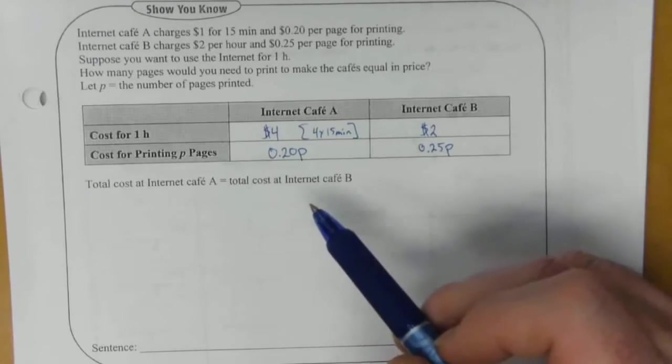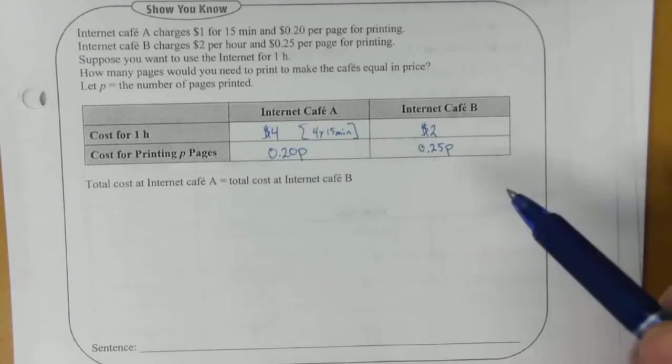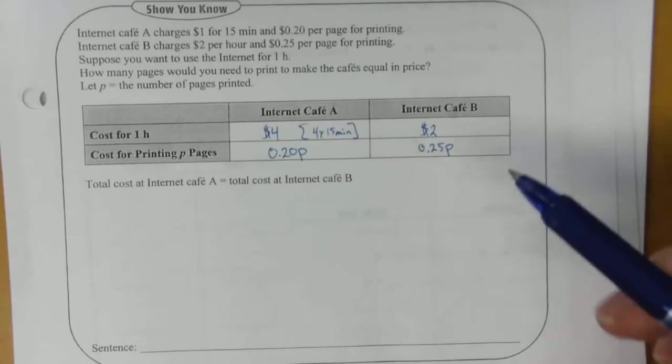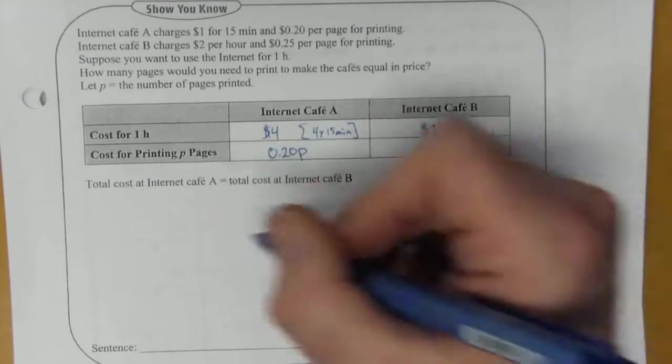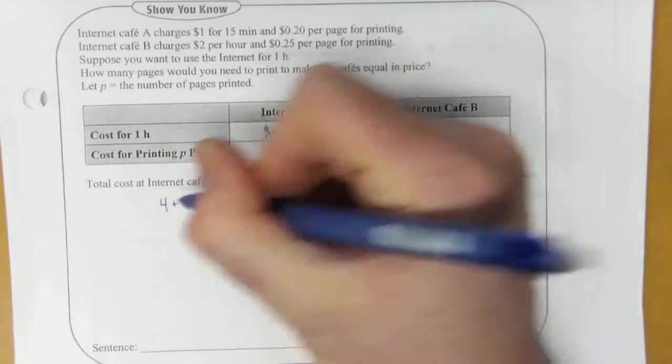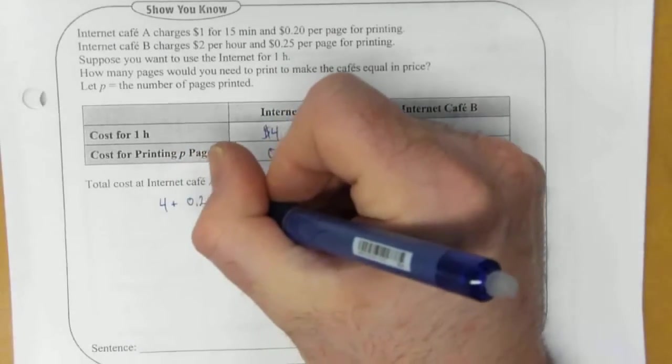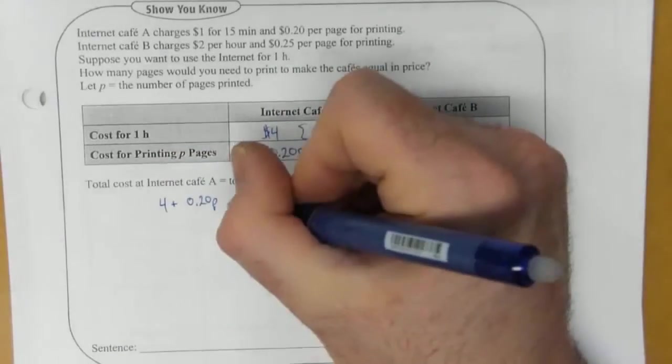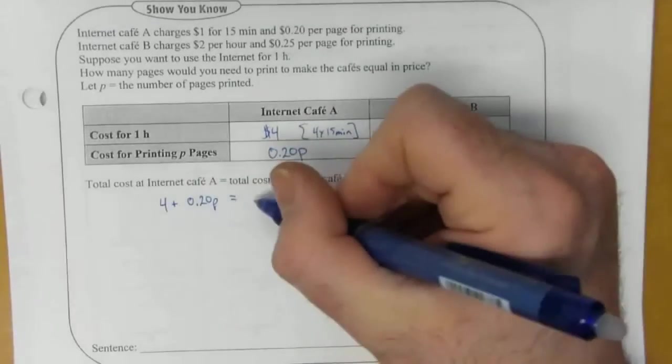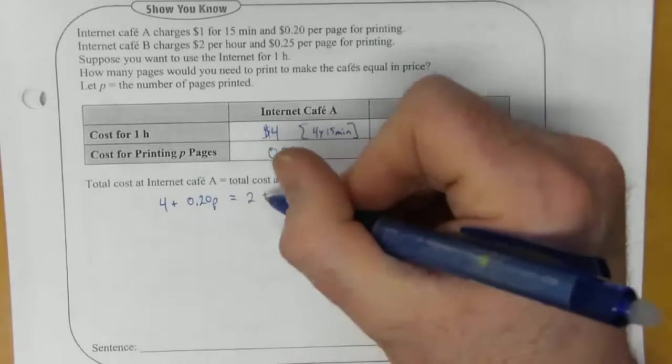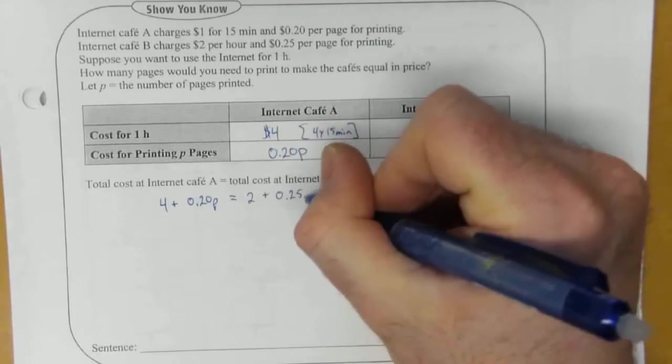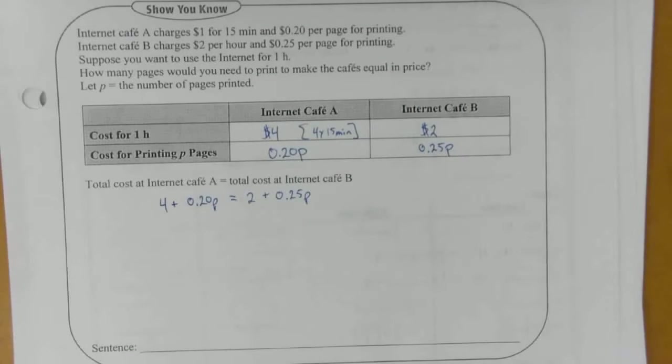So we need to figure out how to write an equation. For A, your total cost for one hour and P pages is going to be four plus 0.20P. And you make those equal and it's going to be two plus 0.25P. This is the equation we're working with.